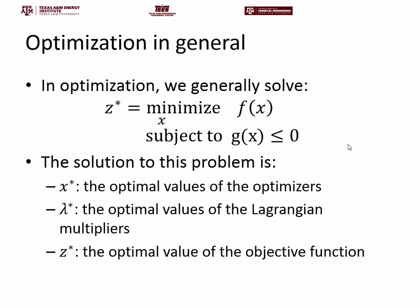This is a general optimization problem in a very generic form. The solution consists of the optimal values of the optimizers x star, your optimal values of the Lagrangian multipliers — if you don't know what Lagrangian multipliers are, I'd refer you to any good optimization textbook — and z star, the optimal value of the objective function. Those first two constitute the solution to the general optimization problem, and these are numbers.